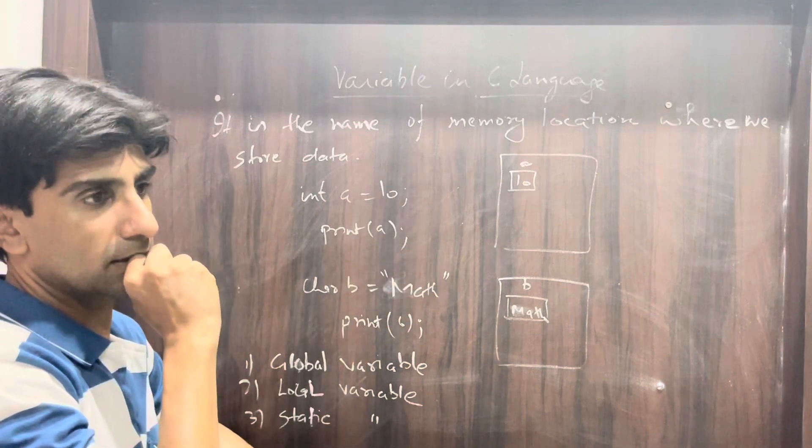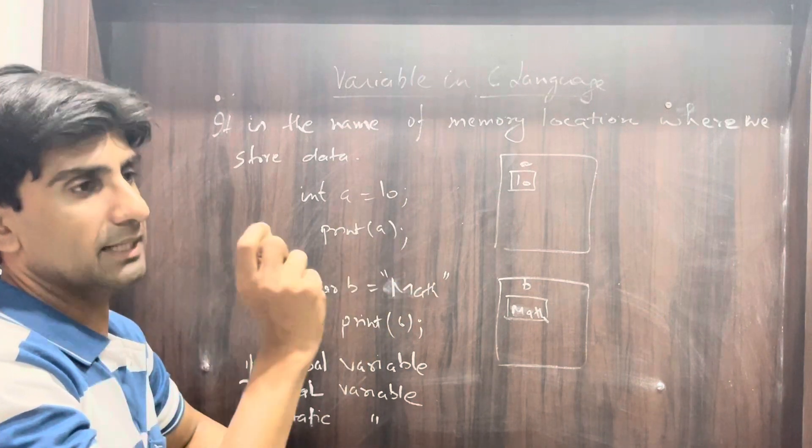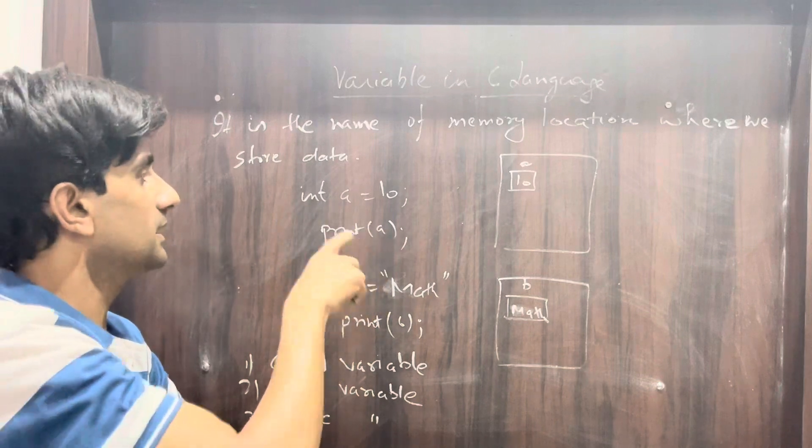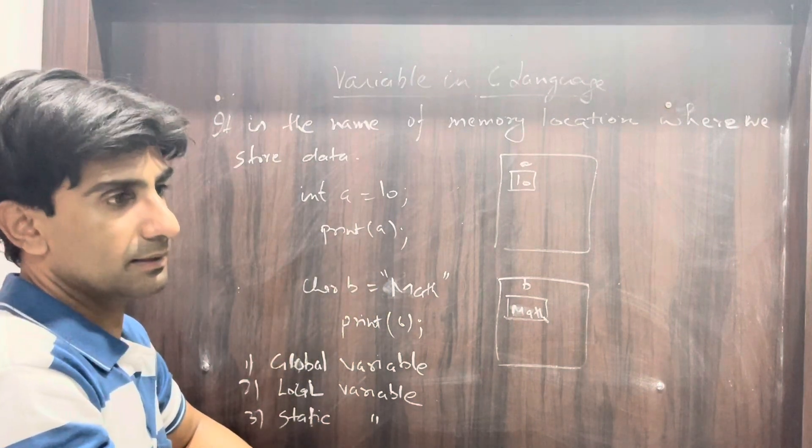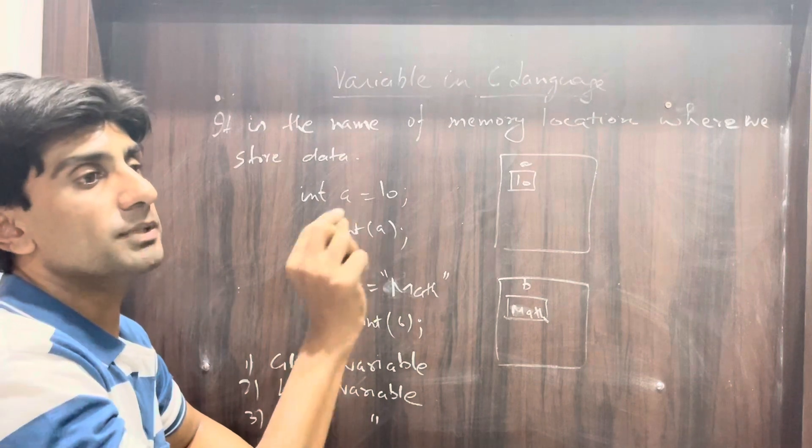You know that int data type has two bytes of memory, so in the whole memory I will create a block of two bytes and give it a name, let's say 'a'. So 'a' is the name of the block.